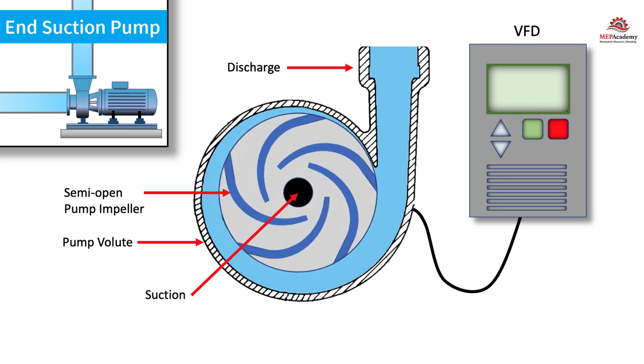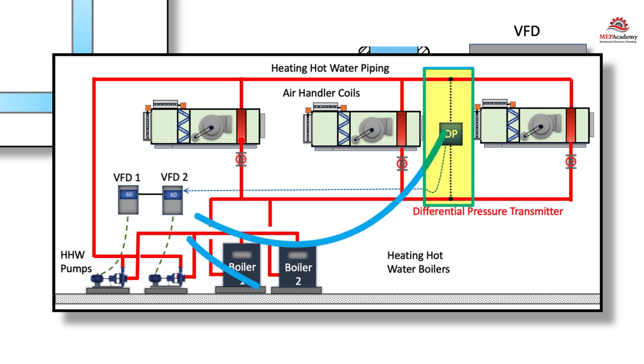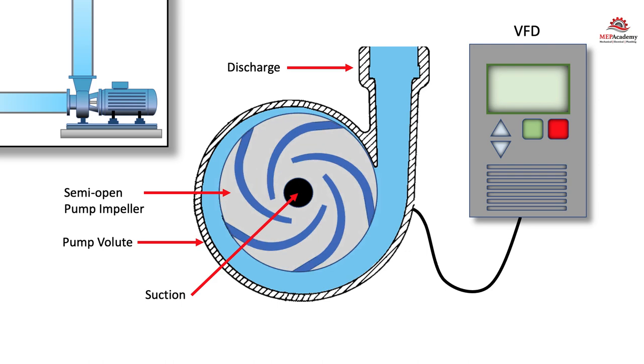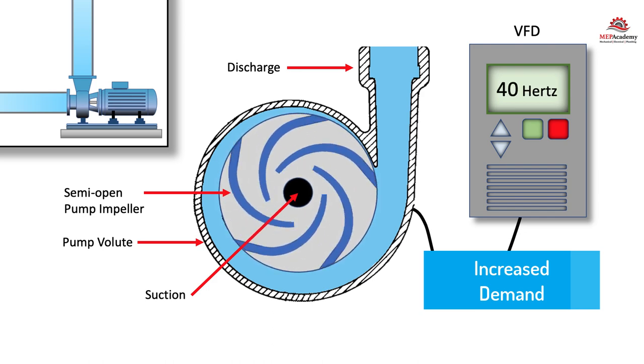The VFD will control flow based on something like a differential pressure controller sending a signal to the VFD to speed up to 40 hertz or whatever number, because the demand on the system has grown and they need more GPM.